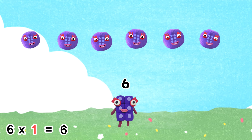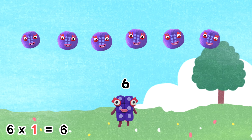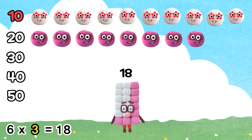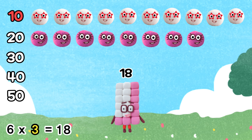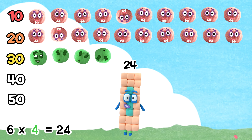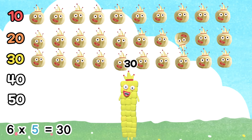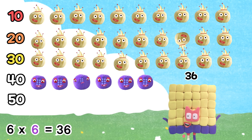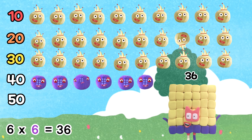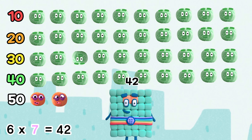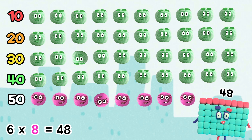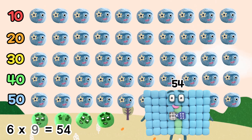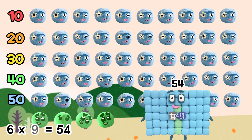Six times one equals six. Six times two equals twelve. Six times three equals eighteen. Six times four equals twenty-four. Six times five equals thirty. Six times six equals thirty-six. Six times seven equals forty-two. Six times eight equals forty-eight. Six times nine equals fifty-four.